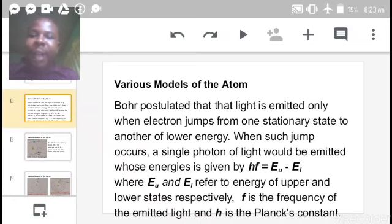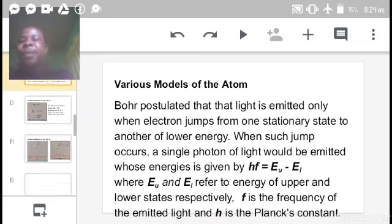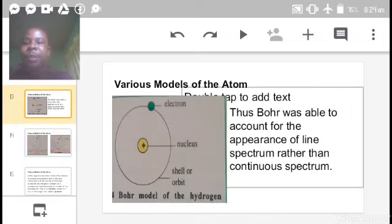He postulated that light is emitted only when electron jumps from one stationary state to another of lower energy. When such jump occurs, a single photon of light, which refers to energy, is emitted, whose energy is given by HF equals EU minus EL. The H refers to Planck's constant, EU represents the upper energy state, while EL represents the lower energy state. The F is the frequency of the emitted photon of light.